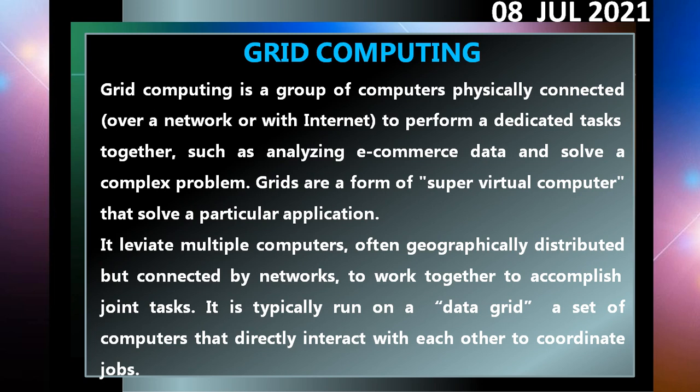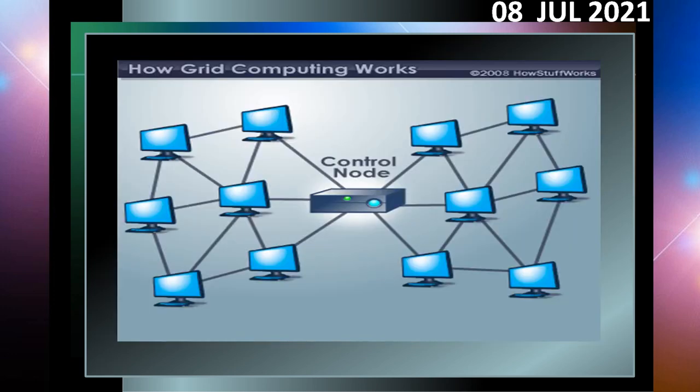Grid computing operates at multiple computers, often geographically distributed, but connected by networks to work together to accomplish joint tasks. It typically runs on a data grid — a set of computers that directly interact with each other to coordinate the jobs. In the image, you can see how grid computing works: there is a central controlling node through which the connected nodes interact, exchange information, and coordinate to solve problems. It is essentially a super virtual computer formed by a grid of computers.